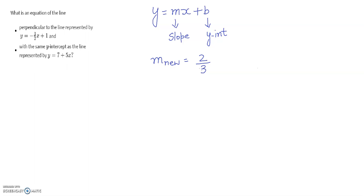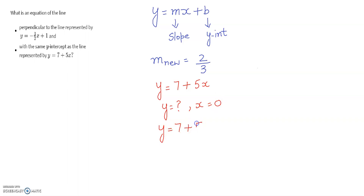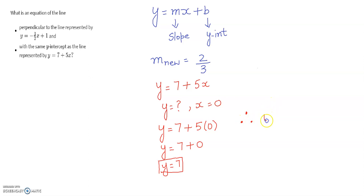Now we need to find the y-intercept. According to the second condition, the new line has the same y-intercept as y equals 7 plus 5x. To find the y-intercept, we substitute x equals 0: y equals 7 plus 5 times 0, which gives y equals 7. So the y-intercept is 7. Therefore, the equation of the new line is y equals 2 over 3x plus 7.